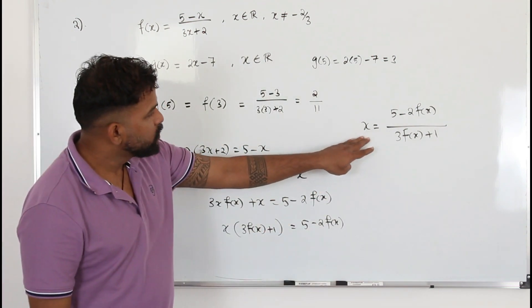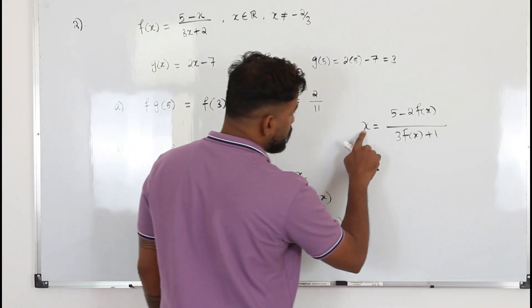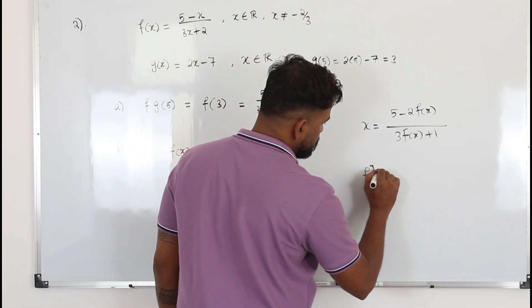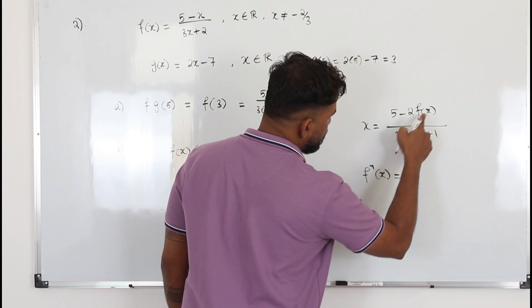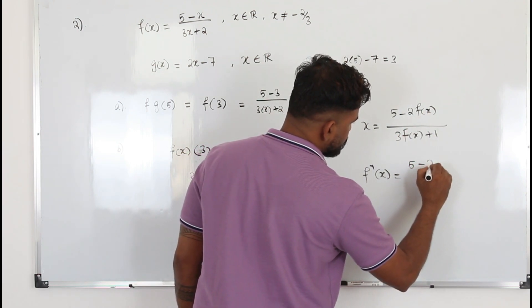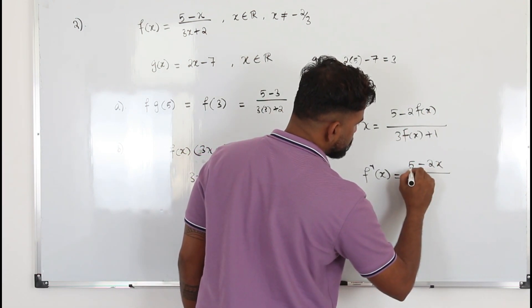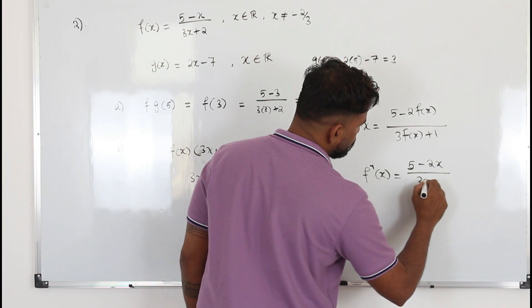So once you made x as a subject, it's easy to find inverse. Replace x by f inverse. Replace f(x) by just x. (5 - 2x) / (3x + 1).